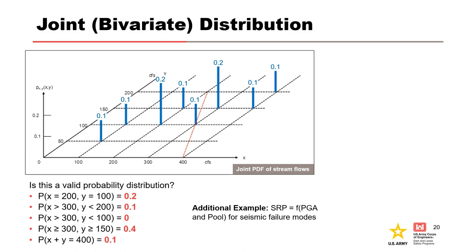We can also have a joint or bivariate distribution that is a function of more than one variable. Joint distributions can be either discrete or continuous. An example would be a system response for an earthquake failure mode, which would be a continuous function of PGA and pool. To be a valid probability distribution, the probabilities must be greater than or equal to zero and must all sum to one, which they do — so it is a valid probability distribution.